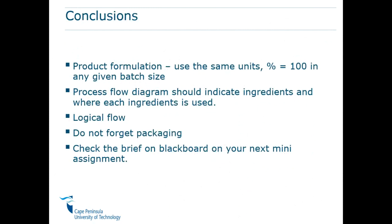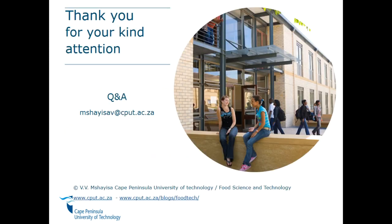In conclusion: in product formulations, use the same units — if you have kilograms, convert everything to kilograms and don't mix kilograms, liters, and grams. The percentage should always be equal to 100 for any given batch size. The process flow diagram should indicate the ingredients and where each ingredient is used, have a logical flow, and don't forget the packaging. After this, check the Blackboard for your mini assignment — it's going to be released in the next few days. If you've got any questions, don't hesitate to contact me. Thank you.